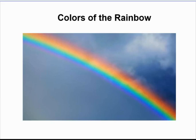Hi boys and girls! Today we are going to be looking at the colors of the rainbow. Our objective today is to review ordinal numbers. The other day we were talking about ordinal numbers, how they help us sequence things and put things in order from first, next, to last using numbers. So today we're going to look at all the different colors of the rainbow and we're going to sequence them in their correct order.